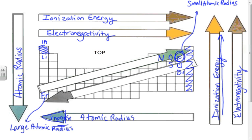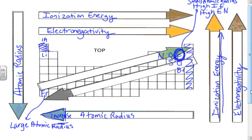So our fluorine up here at the top, in addition to having a small atomic radius, is going to have high ionization energy and high electronegativity. It is the Rudy of the table — small but mighty, small but strong. Over here with francium, remember it was large in size. It's going to have a low ionization energy because it wants to get rid of its electron, and it's also going to have low electronegativity — it has no desire to go get any other electrons.